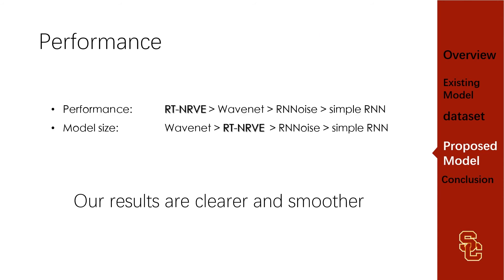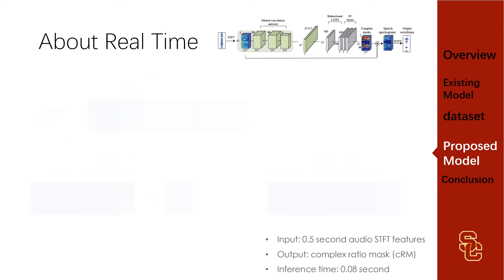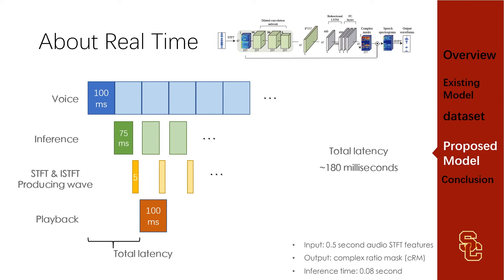Next, I will talk about real-time processing. Research indicates that humans can tolerate up to 200 milliseconds of latency, so our goal is 200 milliseconds. We cut the original speech audio into 100ms segments. Once the speaker finishes a segment, we concatenate it with four previous blocks to create the 500ms input. We feed this into the network; inference takes about 75ms, and short-time Fourier transform and inverse short-time Fourier transform take about 5ms. The total latency is about 180 milliseconds, which is below the 200ms upper limit.